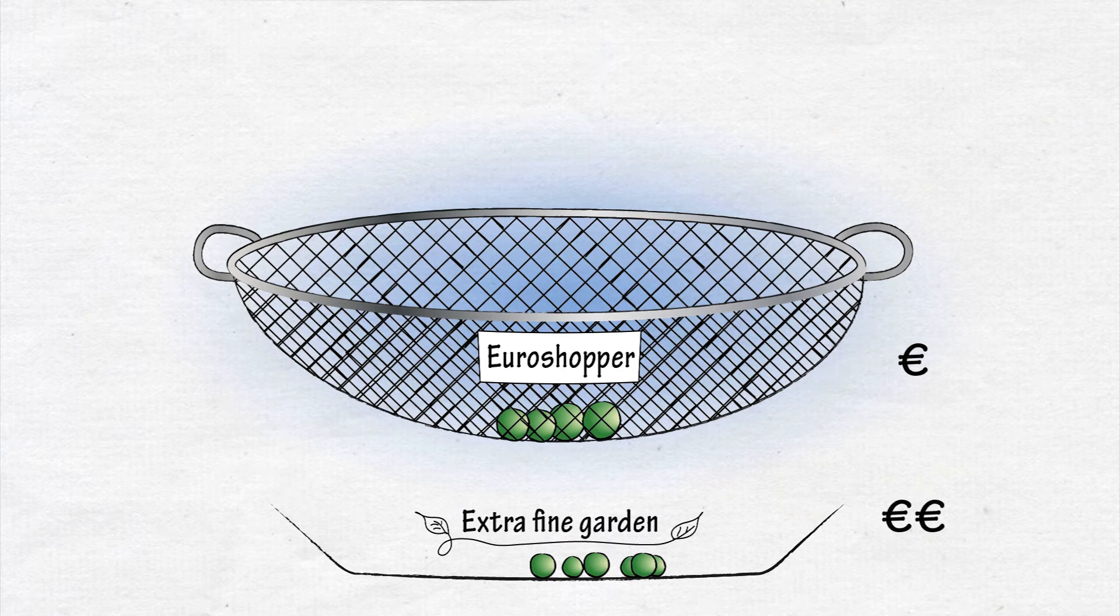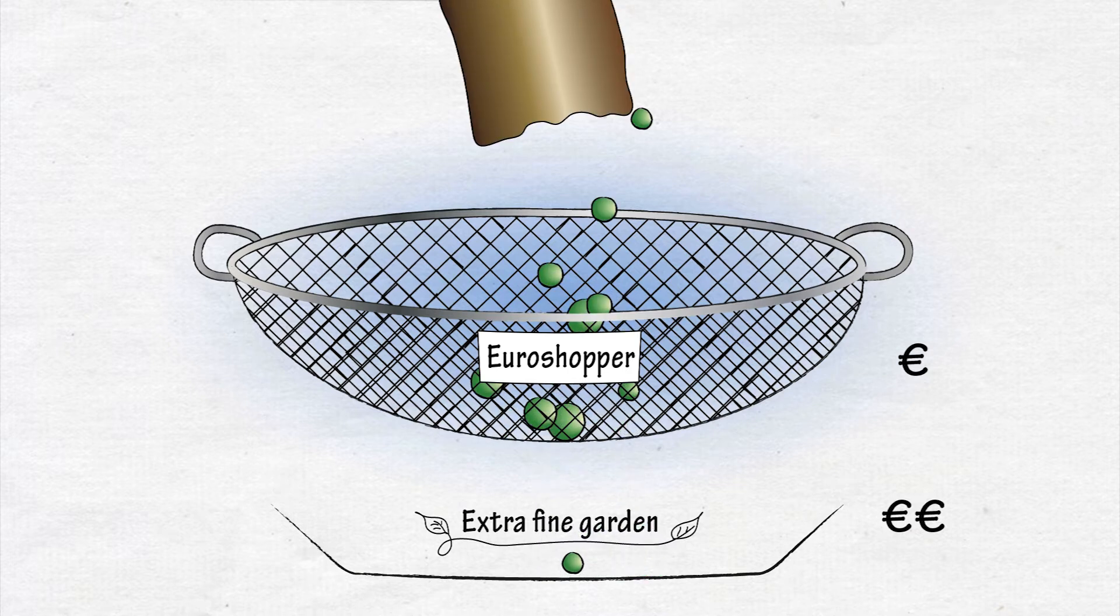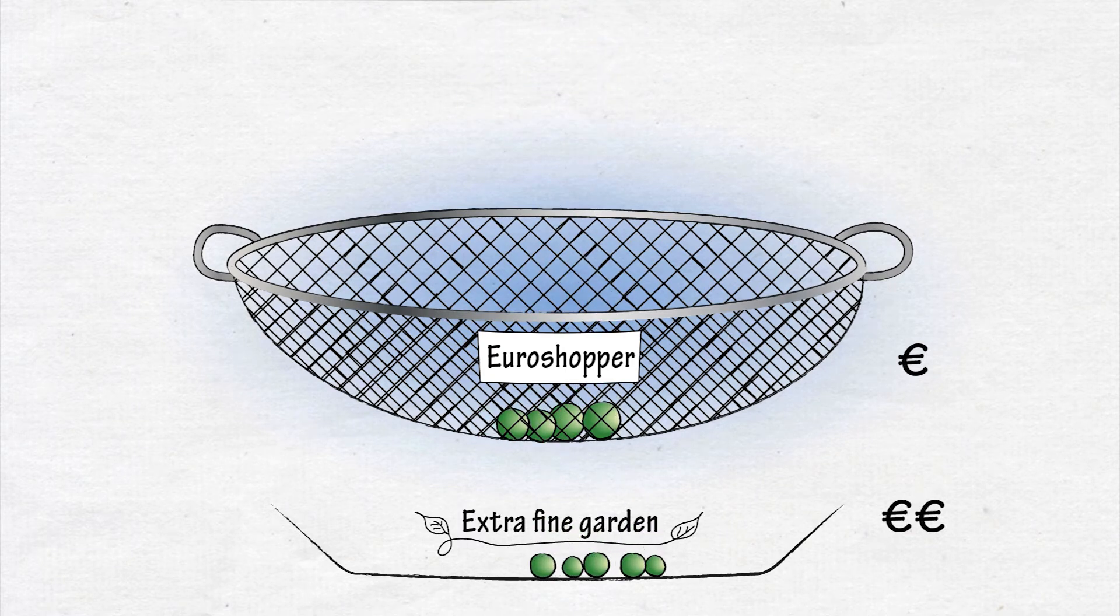If your sieve is a good one, you can put all the peas back into the bag, and when you put them through the sieve again, the peas will be separated in the same way as before. If this is the case, the sieve is 100% reliable as a measurement instrument.